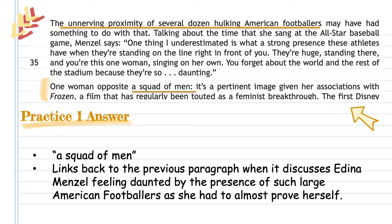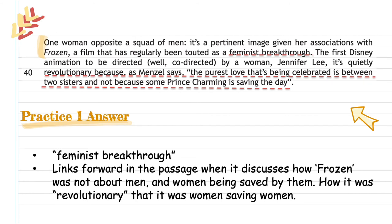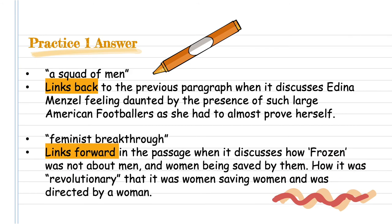So I've quoted and linked back. The next step is to link forward. Remember, you need one sentence that links back and another that links forward — sometimes it'll be two for links back, sometimes two to link forward. In this case it is one for each. For the forward link, I've identified 'feminist breakthrough' as my linking quote, and I discuss how it links forward — Adina Menzel says that feminism was about two sisters rather than a prince charming. So I quote: 'feminist breakthrough links forward in the passage when it discusses how Frozen was not about men and about women being saved, but about women saving women.'